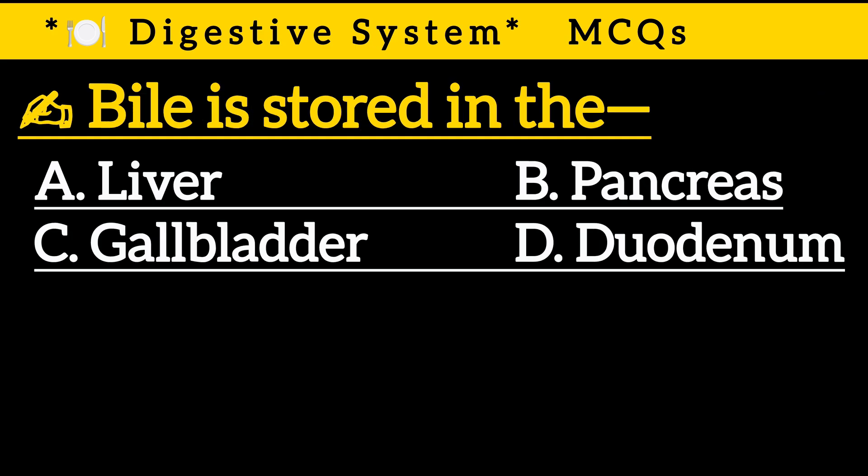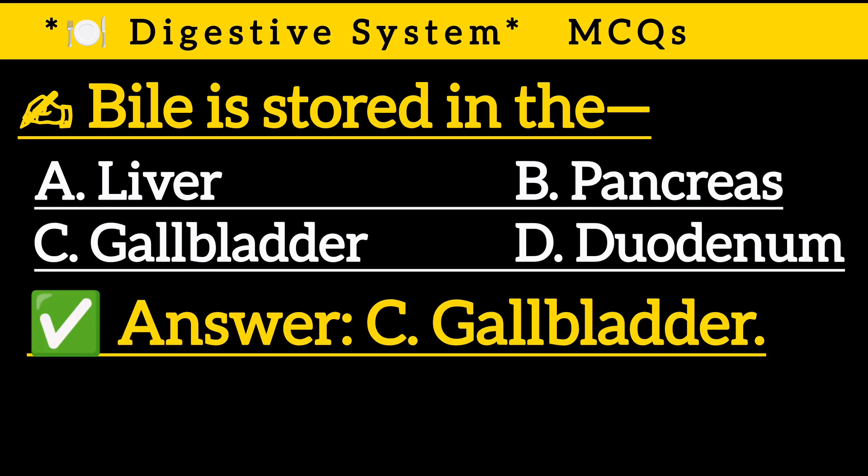Question 8: Bile is stored in the — Option A: Liver, Option B: Pancreas, Option C: Gallbladder, Option D: Duodenum. Correct answer is Option C: Gallbladder.